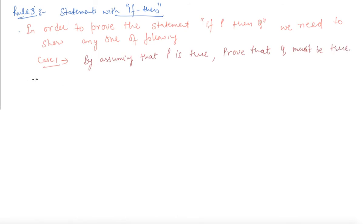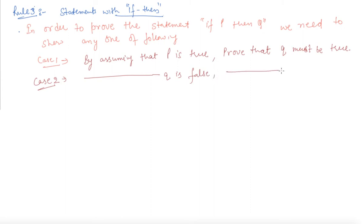This is the direct method. And in the indirect method — you can say, the contrapositive method — case two: by assuming Q is false, prove that P must be false.